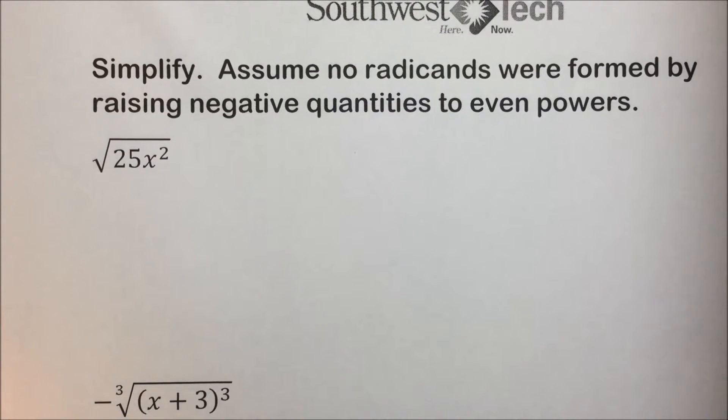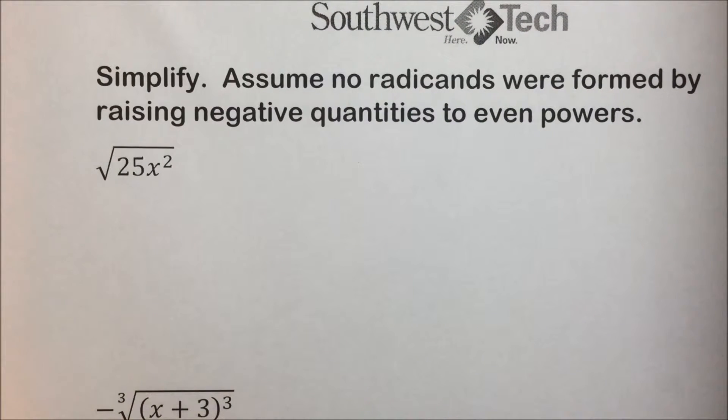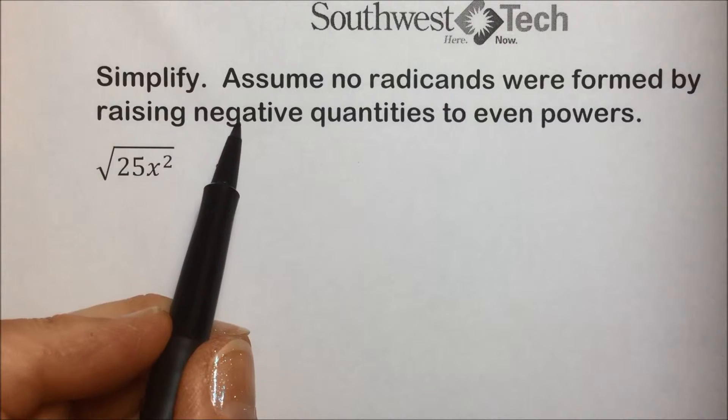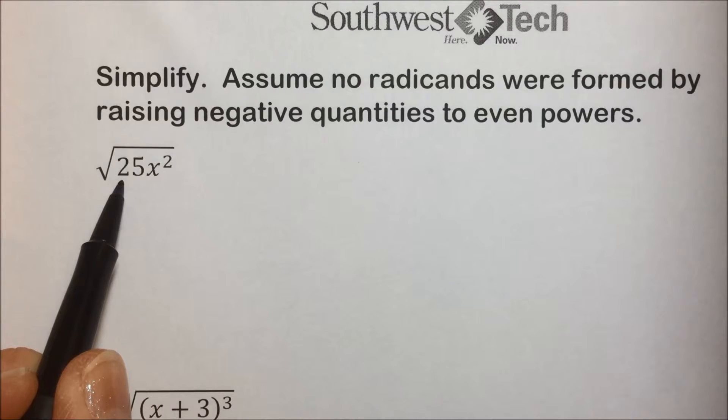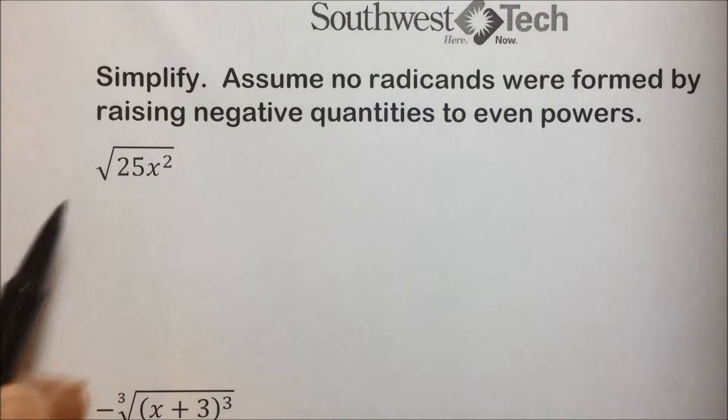But these instructions in this particular example tell us to assume no radicands, that would be the quantity underneath the radical, were formed by raising negative quantities to even powers. So we're off the hook providing the absolute value signs.